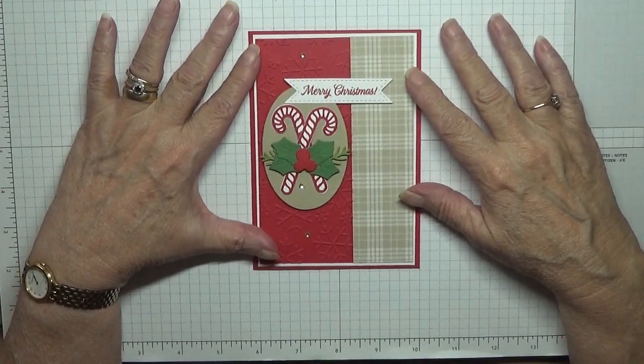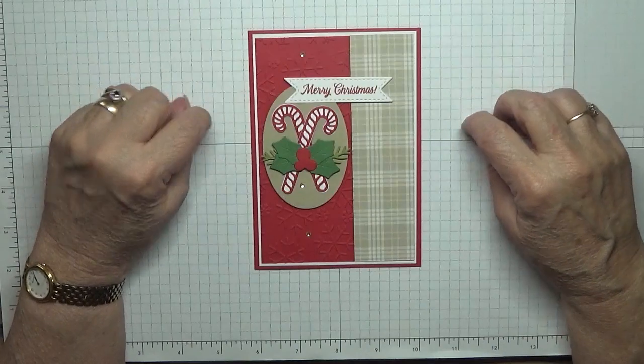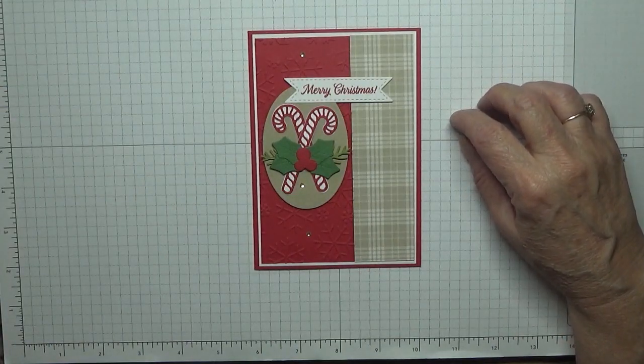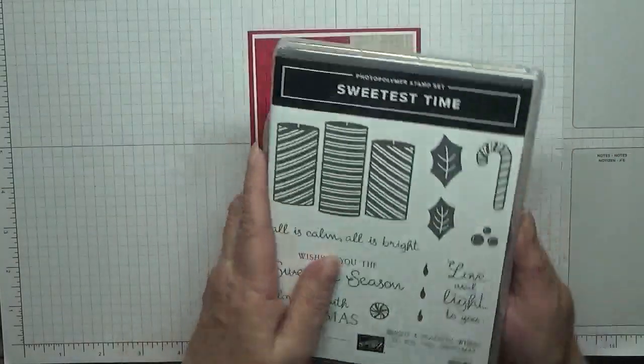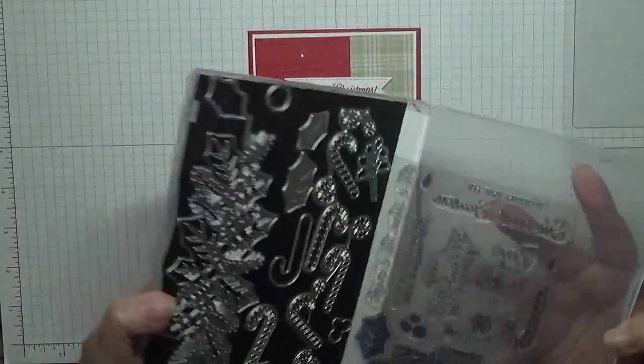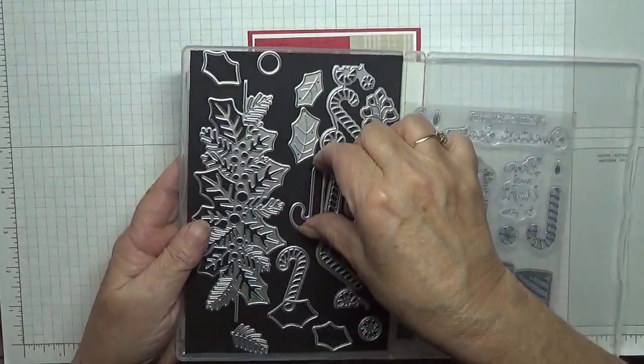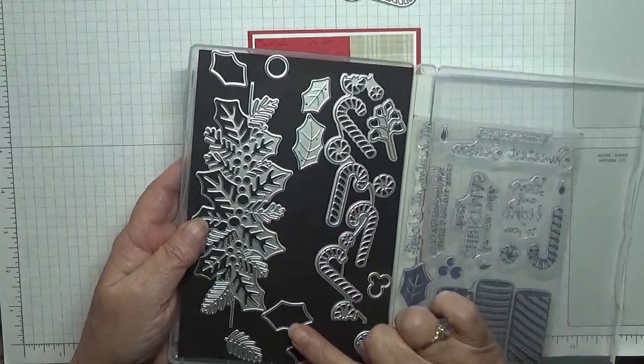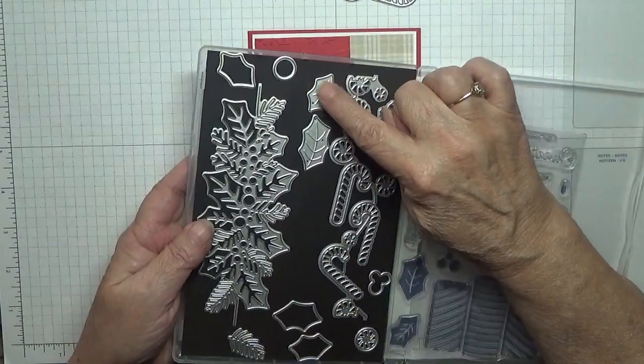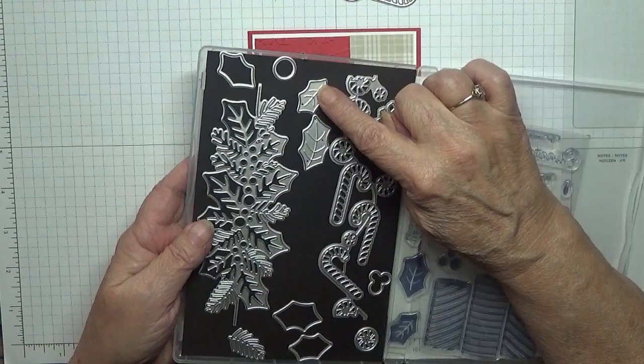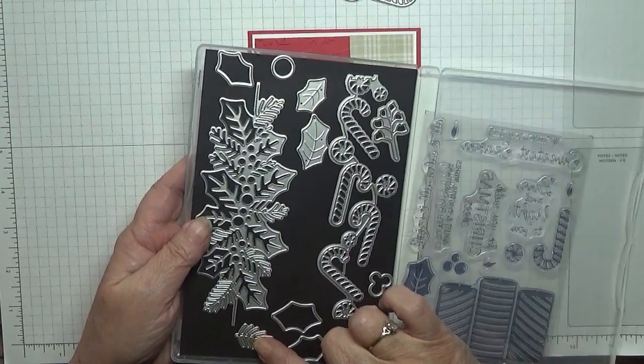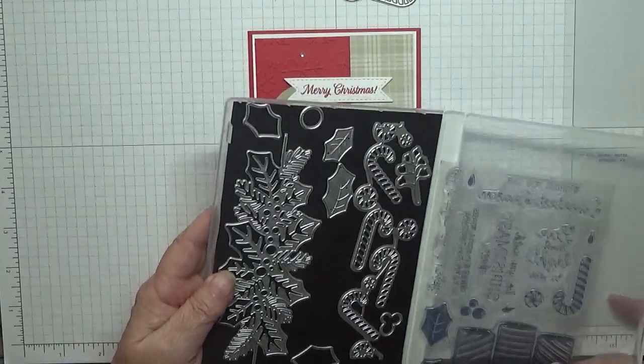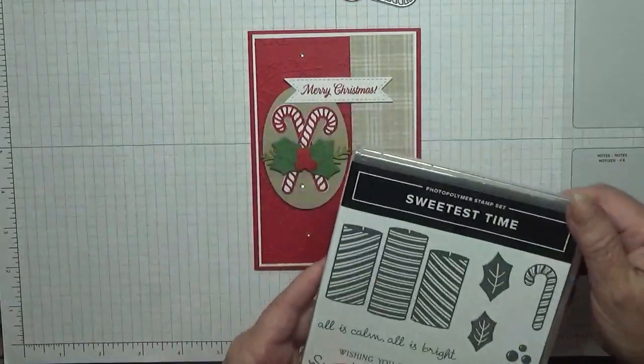Hello welcome back, Georgie Burns here. Today I'd like to show you how I made this card. I made this card using the dies from Sweetest Time and I used this candy cane and that candy cane. I also used the holly which I've cut out, the fern bit which I've cut out and the berries.